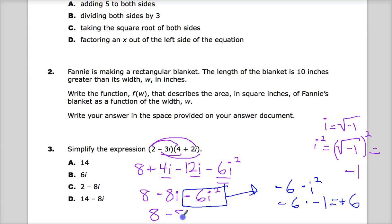8 minus 8i plus 6. And now I'm looking at some more like terms. Positive 8 plus 6 gives me 14. So, 14 minus, if my pen will write, minus 8i. And that's it.